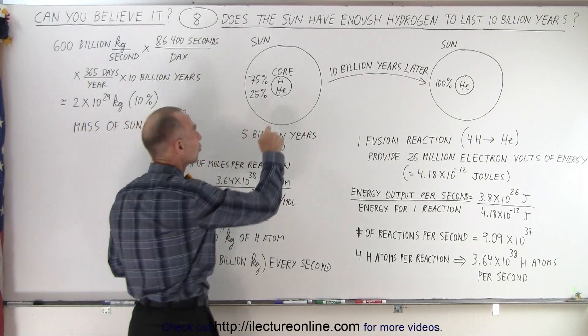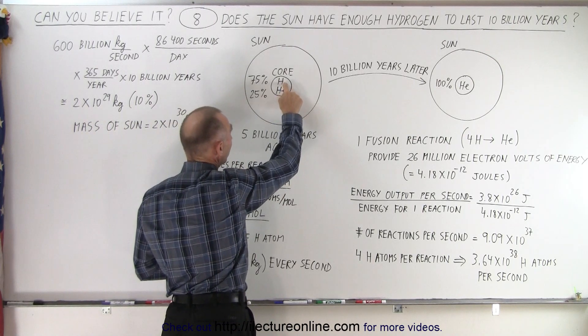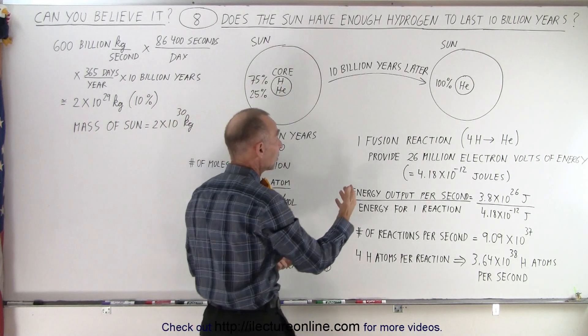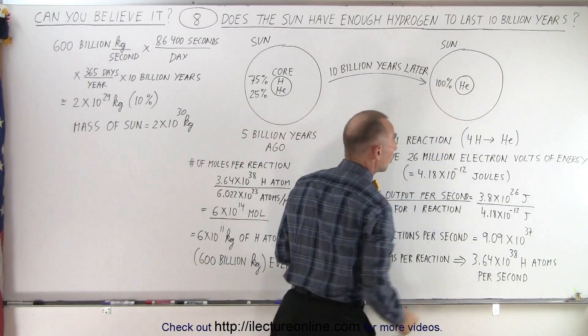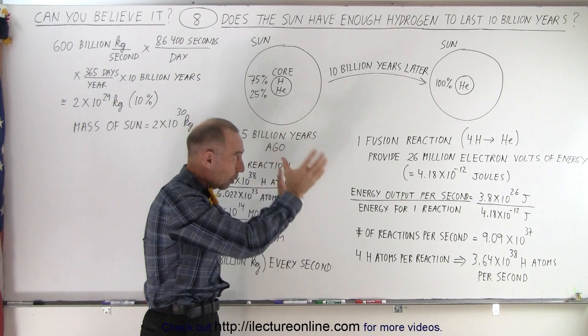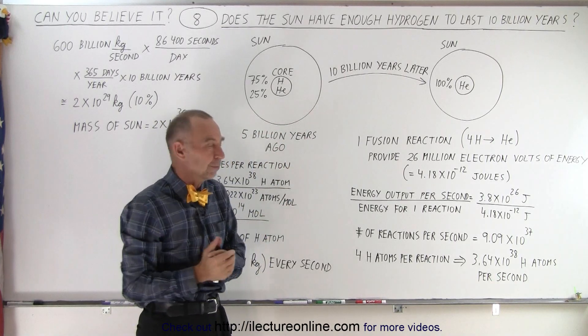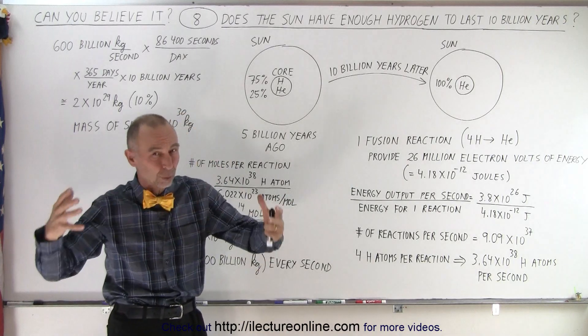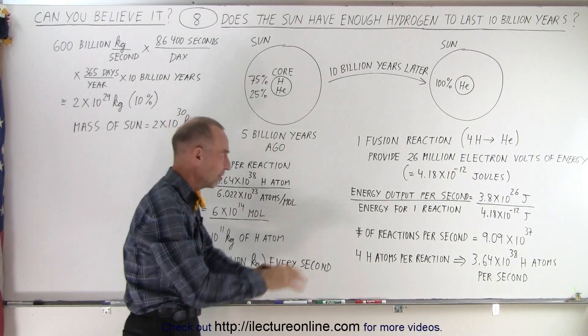But then in the core, the star, and also our Sun, will convert hydrogen into helium. And so 10 billion years later, the entire core will be filled with helium, and no more helium will be seen in the core. Now, around the core, there will still be hydrogen. But all of the hydrogen will have been converted to helium, and when that happens, the Sun will become a red giant. But that's a different story.